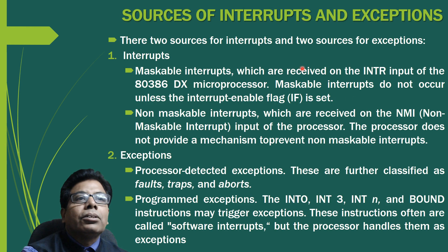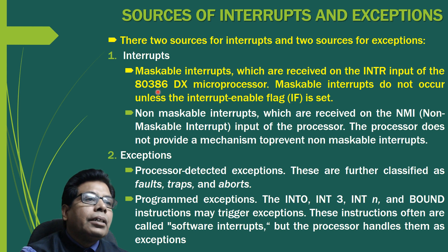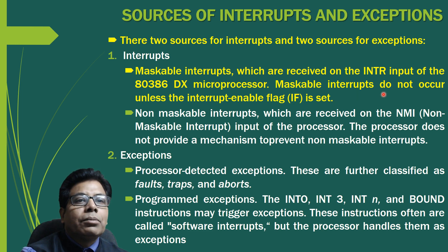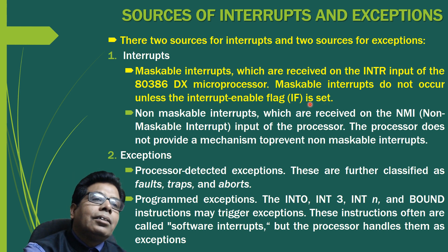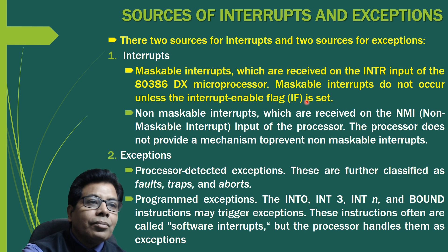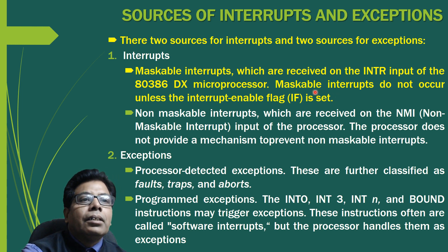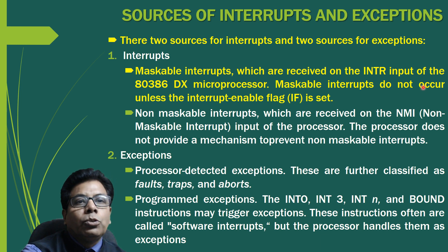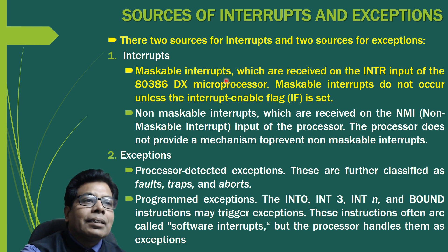There are two sources of interrupts and two sources of exceptions. For interrupts: maskable interrupts, which are received on the INTR input of the 80386-DX processor. Maskable interrupts do not occur unless the interrupt enable flag (IF) is set. If the flag is clear, the interrupts are masked — meaning they can be suppressed by clearing this flag.